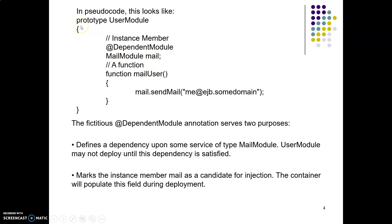Let us look at how dependency injection is implemented inside our container. Consider a prototype called user module. Inside this we have an instance member called mail module, and we create one object called mail. This mail is the dependent module for this particular application. Whenever we make use of mail, it is declared as a dependent module using an annotation. We use the mail object to send mail to a particular person, thereby injecting the dependency — the mail module object — inside the container.